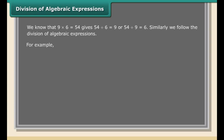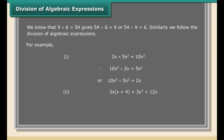Division of algebraic expressions: we know that 9 × 6 = 54, which gives 54 ÷ 6 = 9 or 54 ÷ 9 = 6. Similarly, we follow division for algebraic expressions. For example, 2x × 5x² = 10x³, therefore 10x³ ÷ 2x = 5x², or 10x³ ÷ 5x² = 2x.